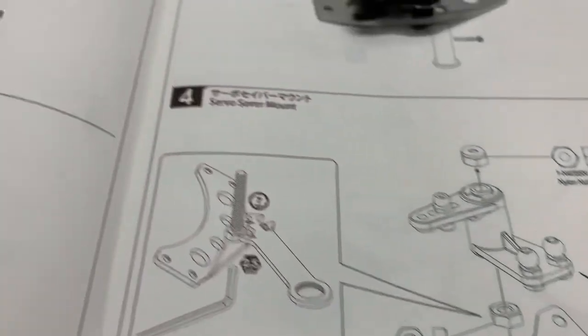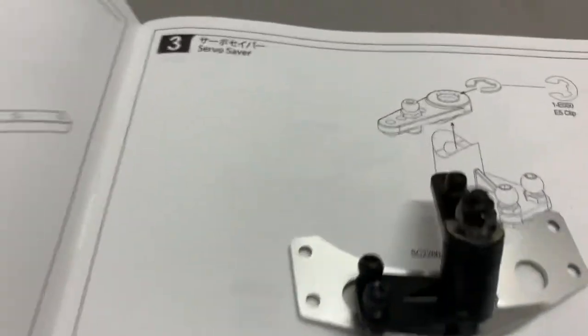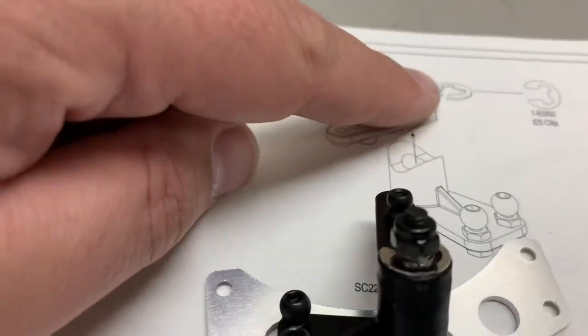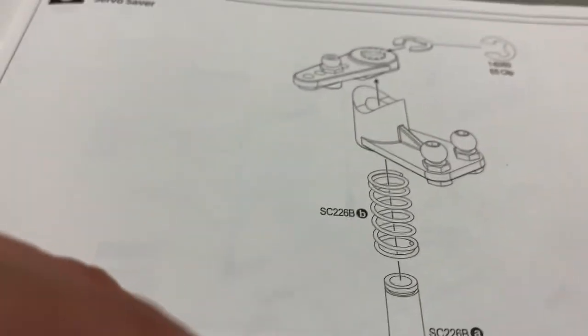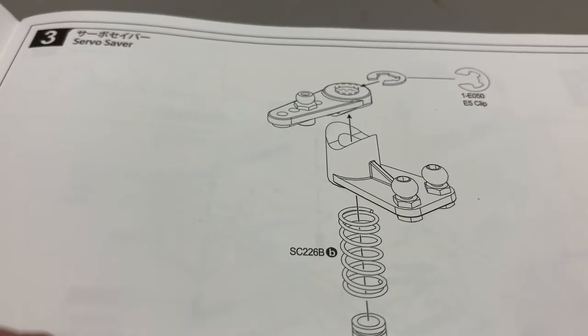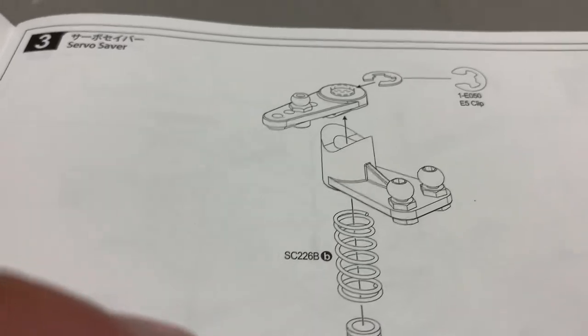This kind of completes bag A. The only thing that was a little difficult is getting this E-clip on. It was a little tighter than I thought. I kind of had to play with the spring a little bit and make sure I compress it correctly to get it on. But nothing too crazy.